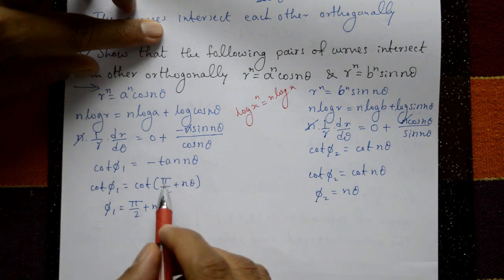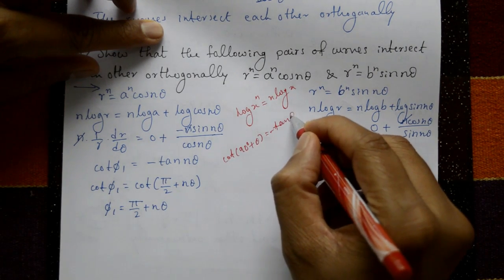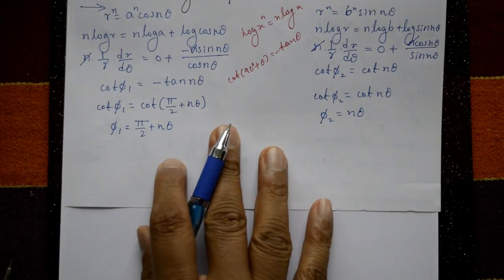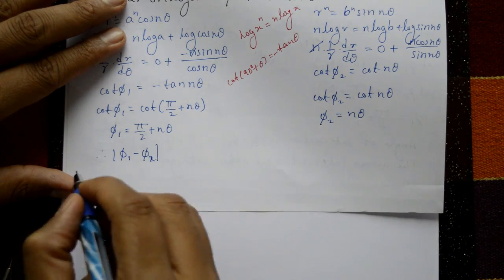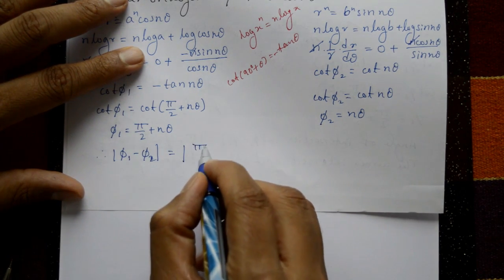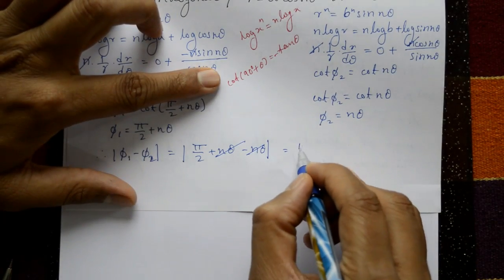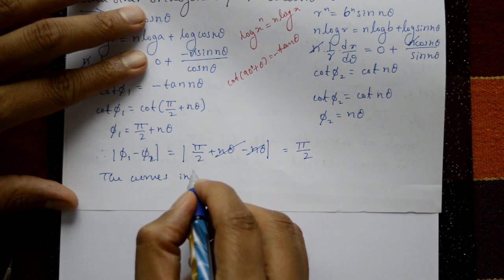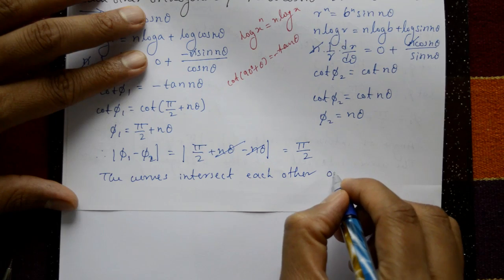Using the identity cot(90° + nθ) = −tan(nθ), we find φ₁ = π/2 + nθ. Therefore, |φ₁ − φ₂| = |(π/2 + nθ) − nθ| = π/2. This means the curves intersect each other orthogonally, since the angle of intersection is π/2.